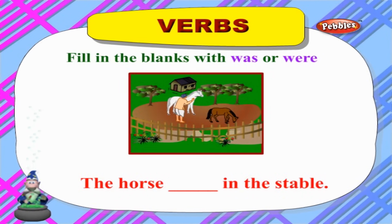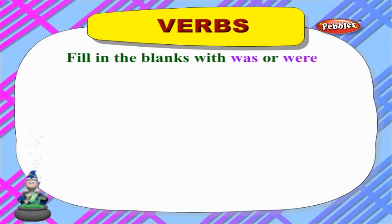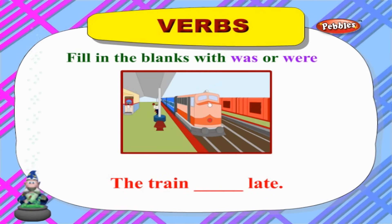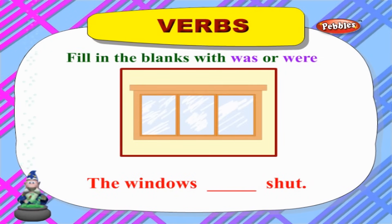Now I am going to teach you the usage of 'was' and 'were'. We use 'was' when we talk about a singular noun, and 'were' when we talk about a plural noun. 'The horse ___ in the stable' — horse is singular, so we use 'was': 'The horse was in the stable.' 'The train ___ late' — train is singular, so we use 'was': 'The train was late.'